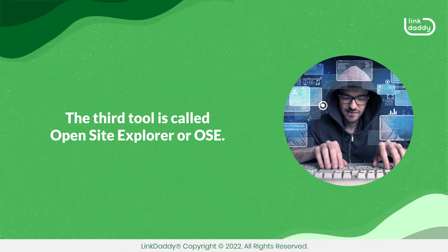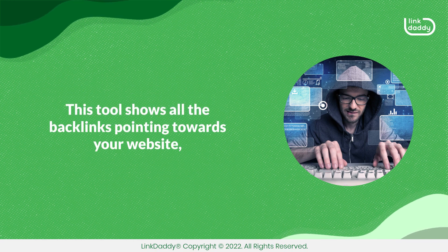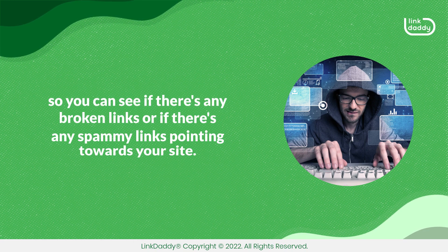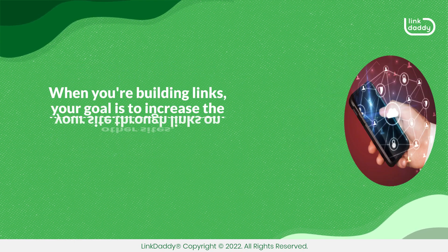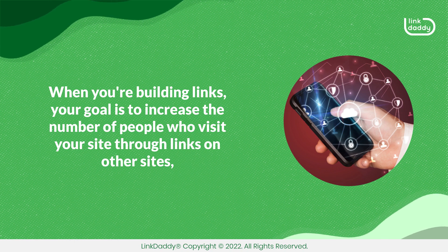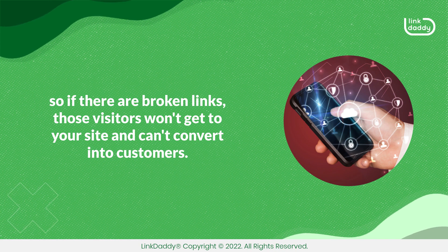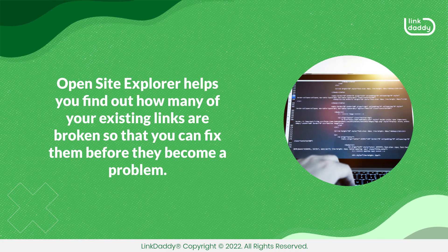The third tool is called Open Site Explorer, or OSE. This tool shows all the backlinks pointing towards your website, so you can see if there are any broken links or spammy links pointing towards your site. When you're building links, your goal is to increase the number of people who visit your site through links on other sites. So if there are broken links, those visitors won't get to your site and can't convert into customers. Open Site Explorer helps you find out how many of your existing links are broken so that you can fix them before they become a problem.